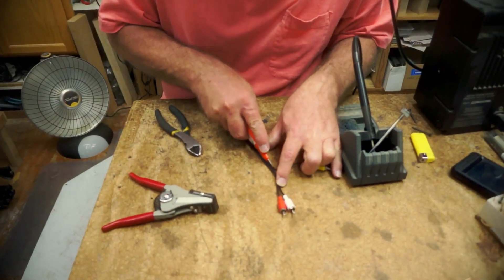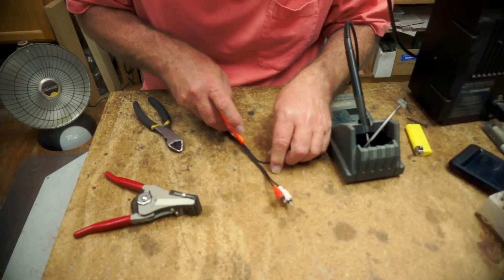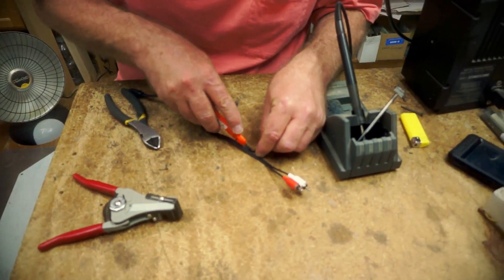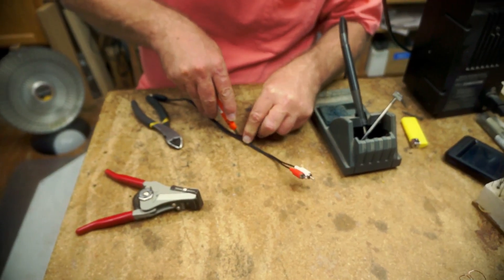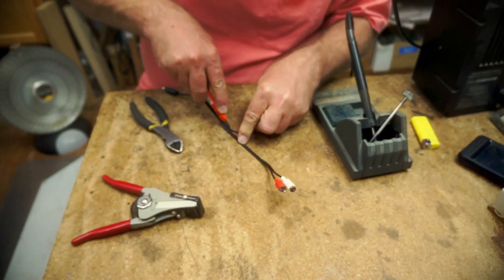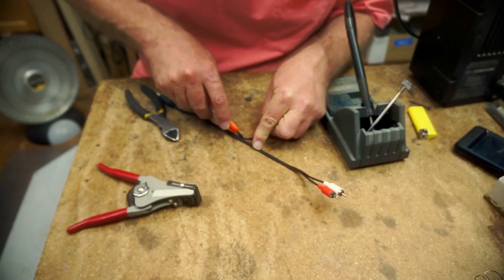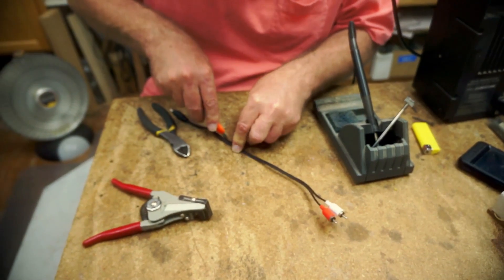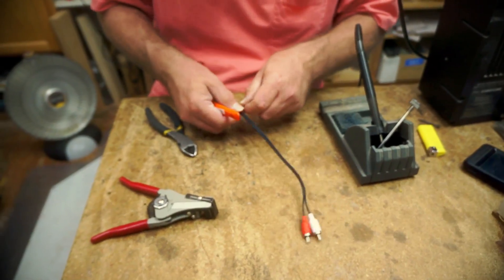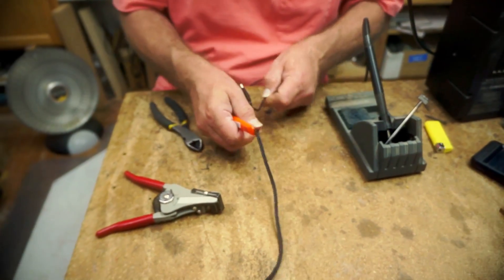He's going to strip out the yellow video cable, so that's all we have. We're going to get rid of the red and white audio cables. Within the video cable there should be both the video signal wire as well as the ground wire.